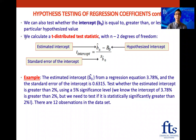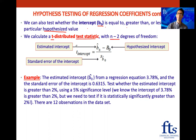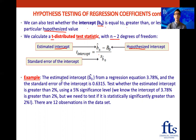Now we move on to testing the intercept. We can test whether the intercept b0 is equal to, greater than, or less than any particular hypothesized value. Again we calculate a t-distributed test statistic with n minus two degrees of freedom. The formula is the same structure as before: estimated intercept minus the hypothesized intercept, divided by the standard error of the intercept.